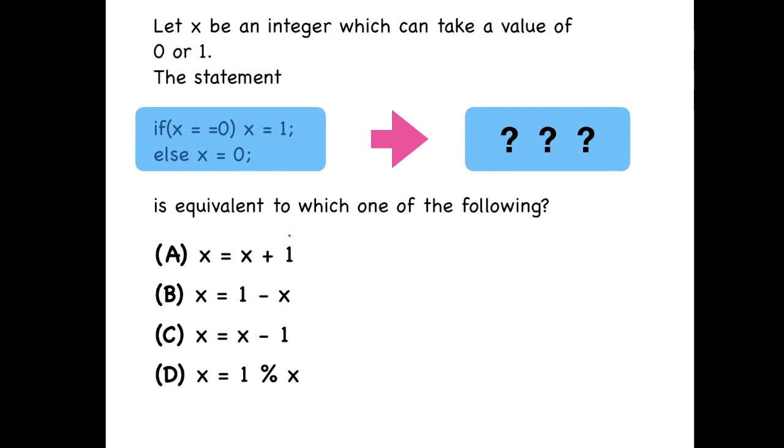To solve this we will put X equals to 0 and 1 at these places and find the new value of X, and whichever option matches that will be the answer. So let's solve for X equals to 0.